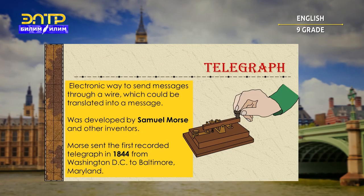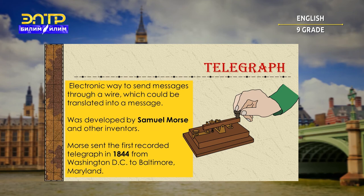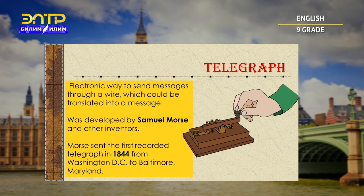Now let's learn some modern means of communication. The first one is the telegraph — an electronic way to send messages through a wire which could be translated into a message. It was developed by Samuel Morse and other inventors. Morse sent the first recorded telegraph in 1844 from Washington to Maryland. The telegraph uses electrical signals usually conveyed via telecommunication lines or radio, and the electromagnetic telegraph is a device for human-to-human transmission of coded text messages — the first form of electrical telecommunications.